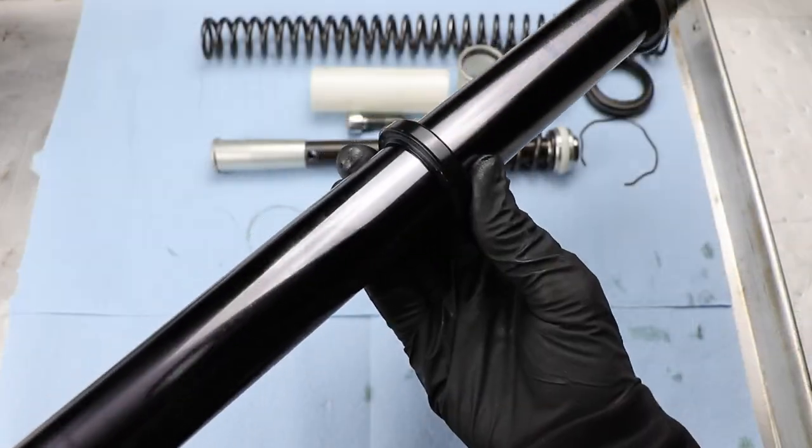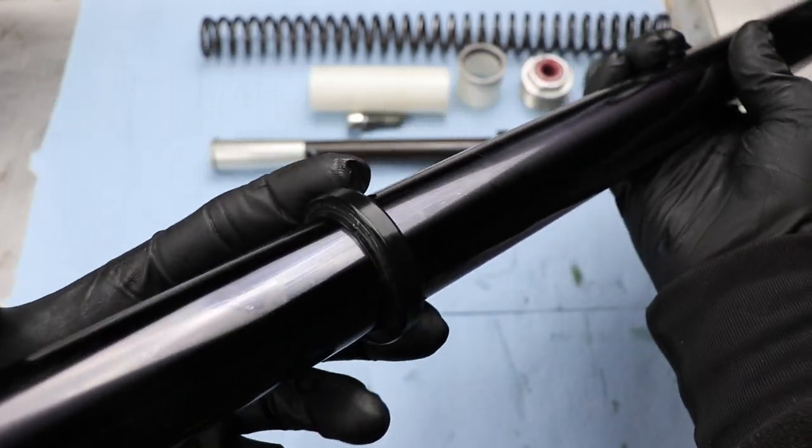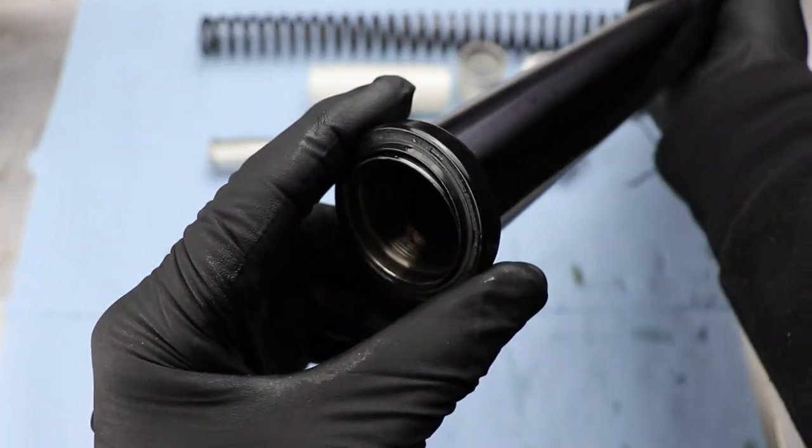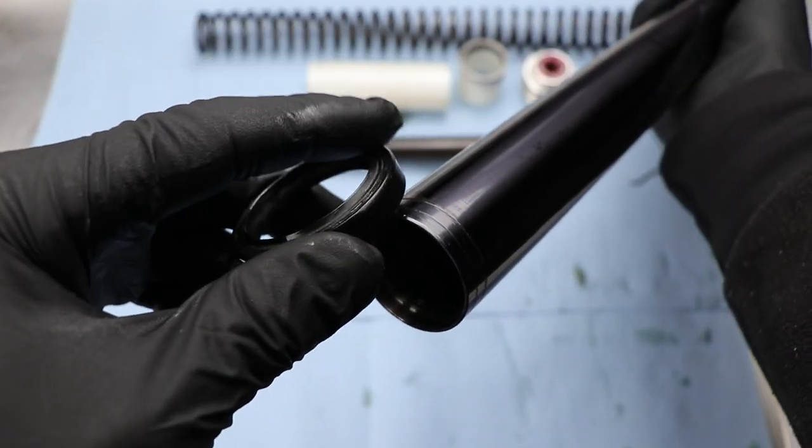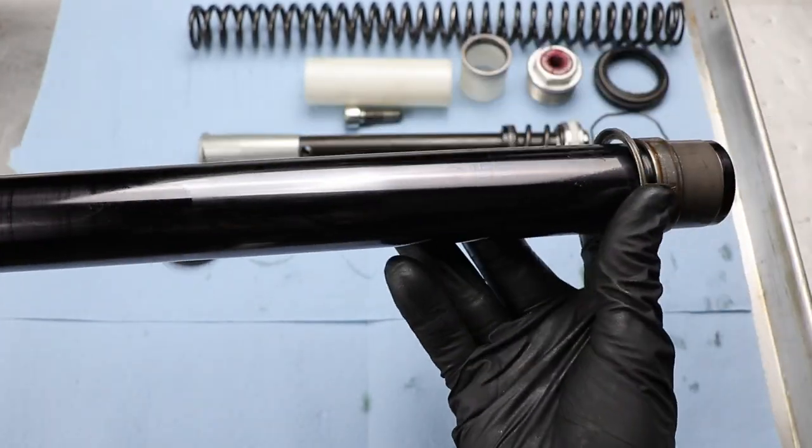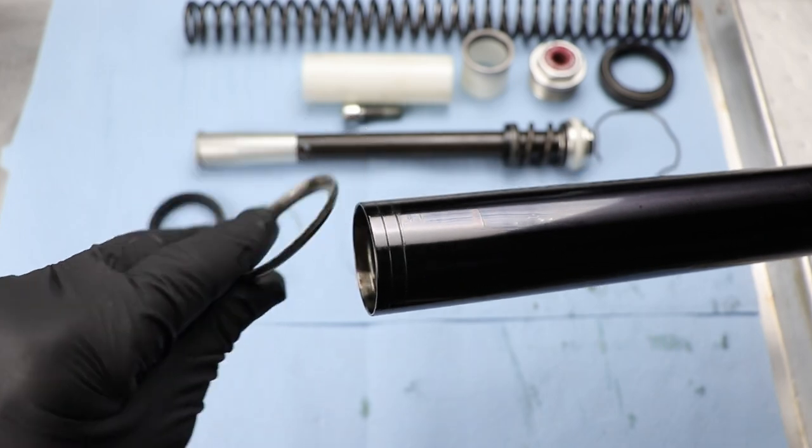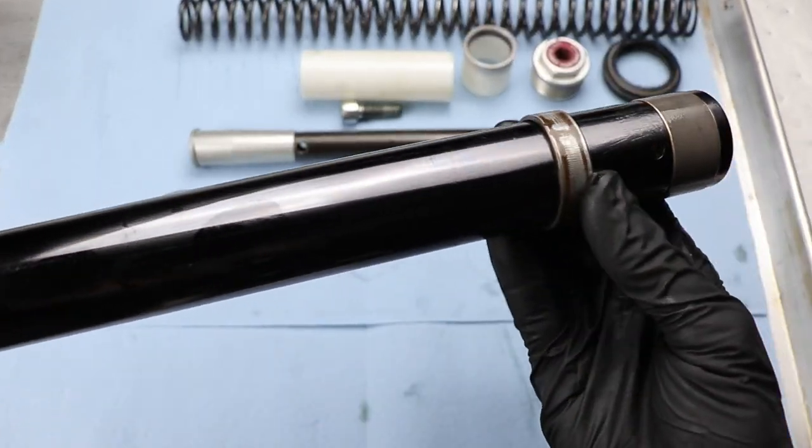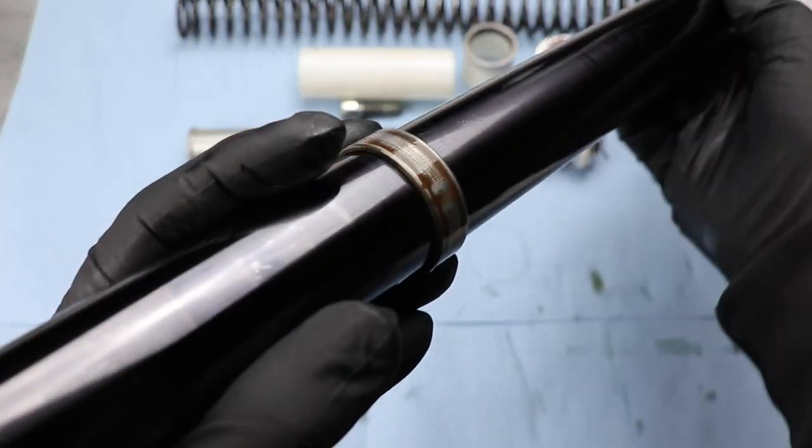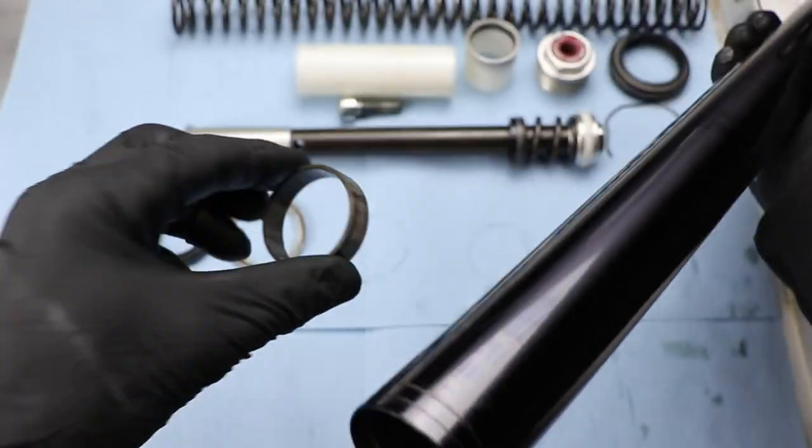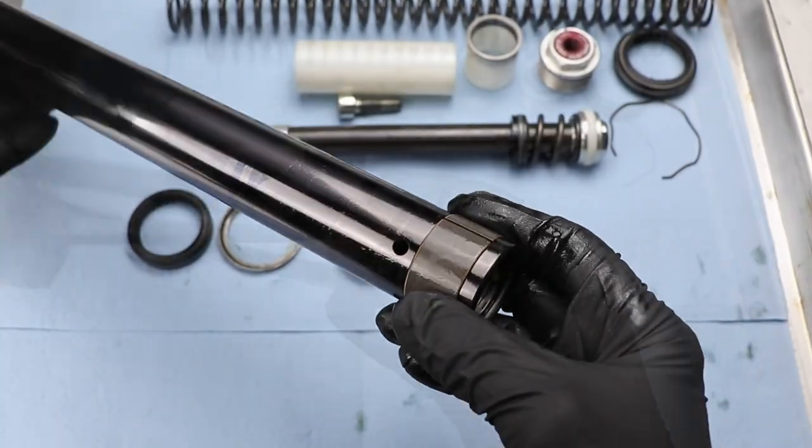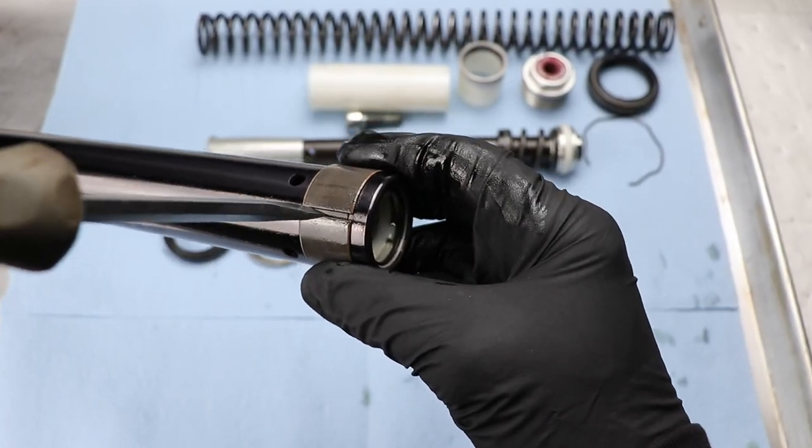Now when you take them off, pay attention to the top and bottom of the seal, they do have an orientation. Then there's a washer, mine's cupped, yours might be flat, just pay attention to that if that's the case. Then the upper bushing, you can see this one's a little worn, it's not too bad. And then with the lower bushing, it sits in a recess in the bottom of that slider. Just pry it open, slide it off. Easy.